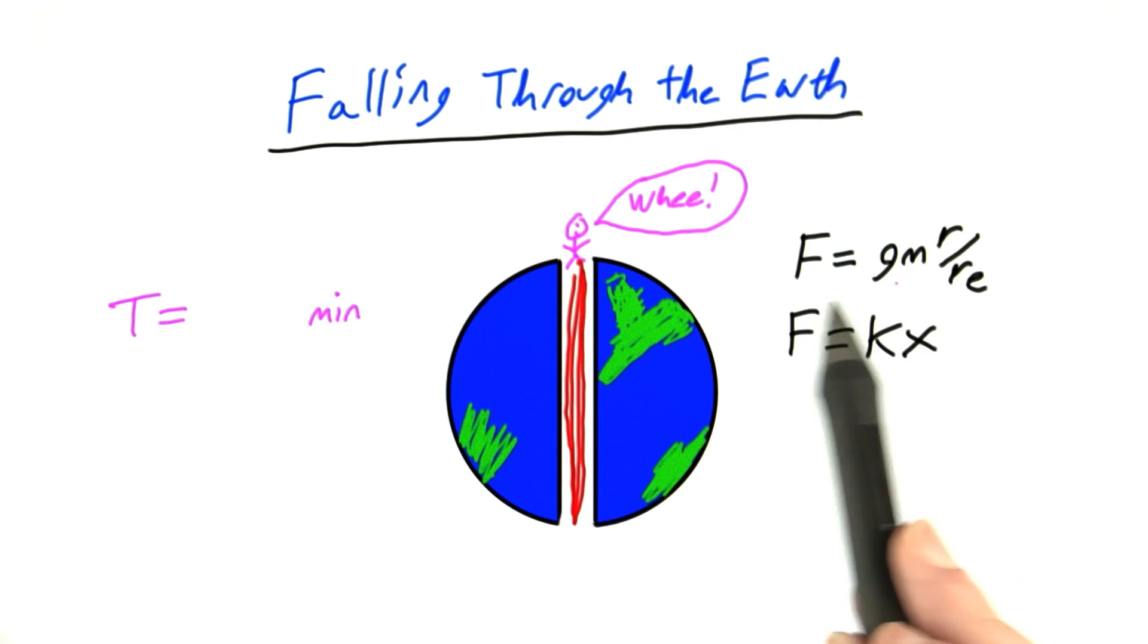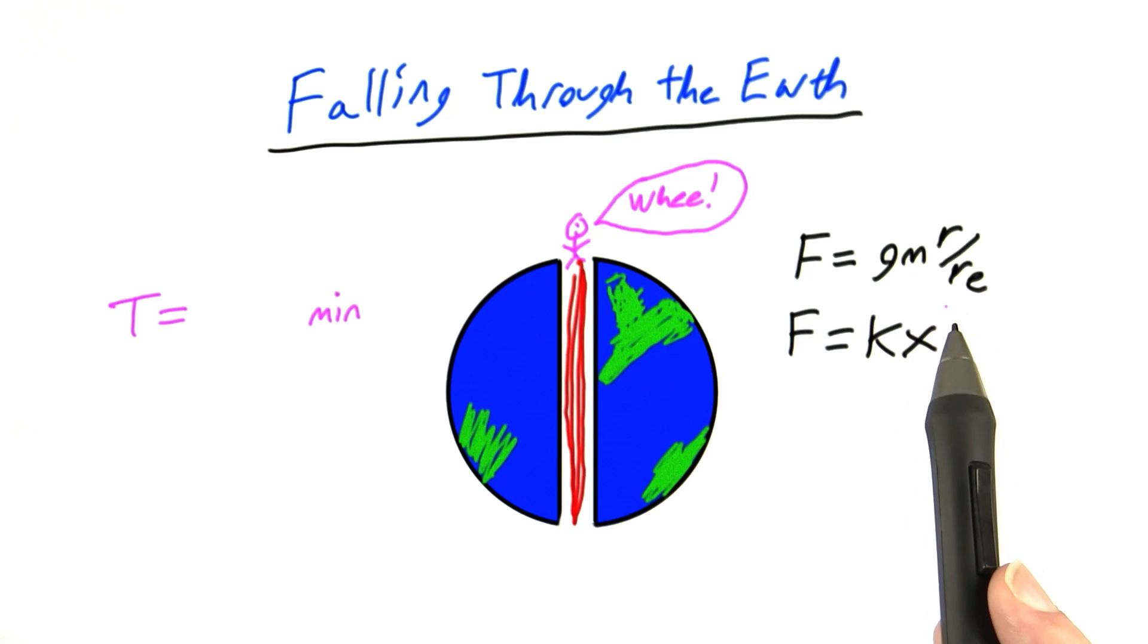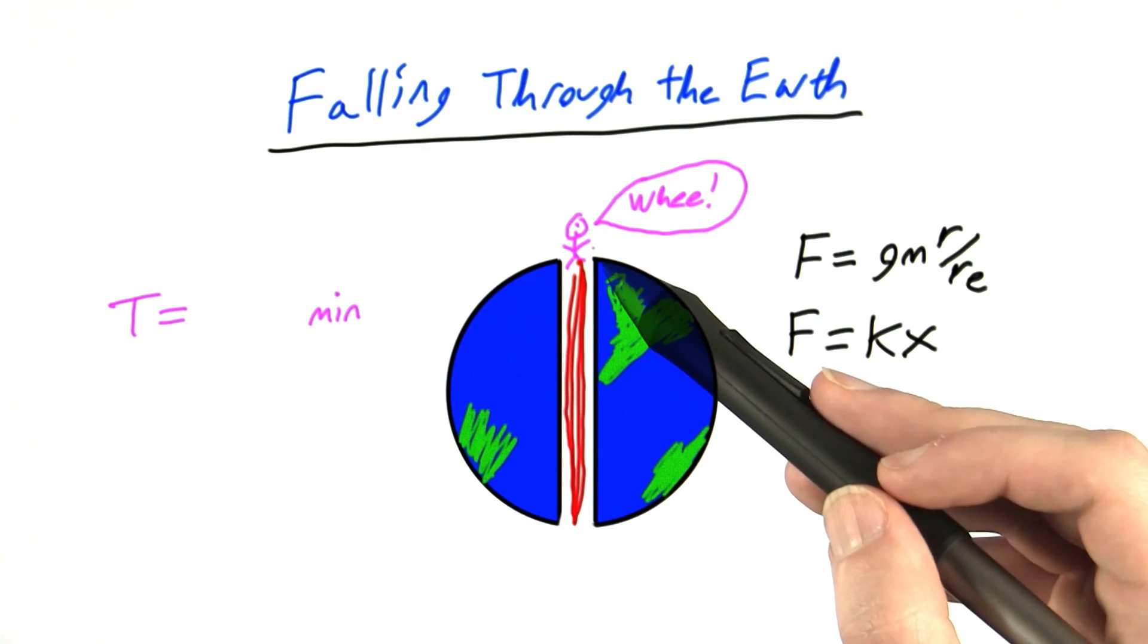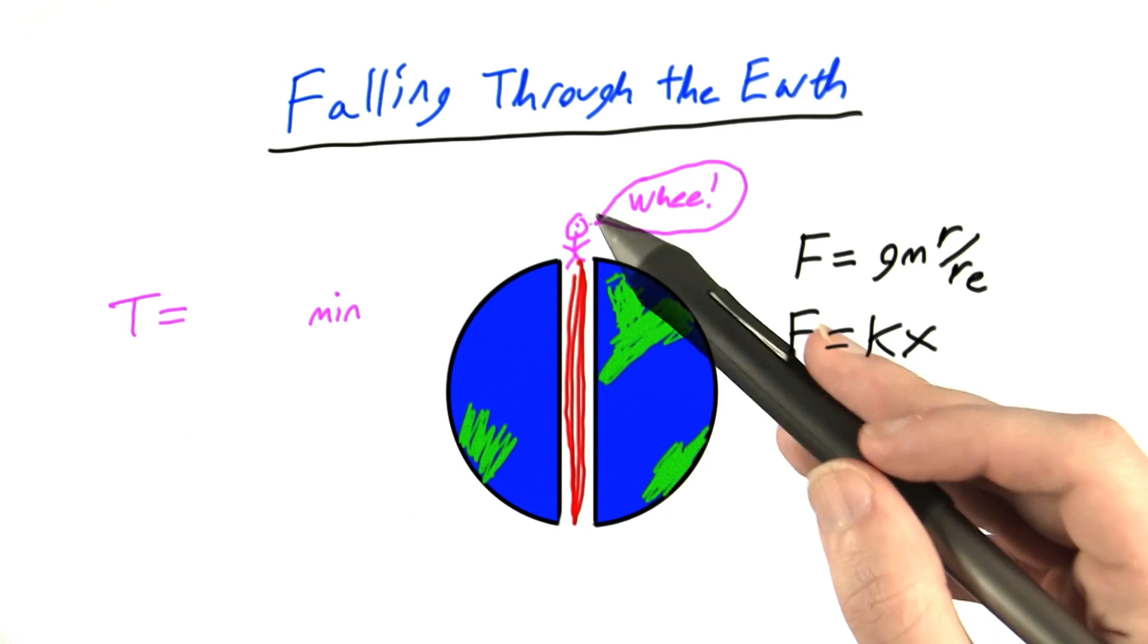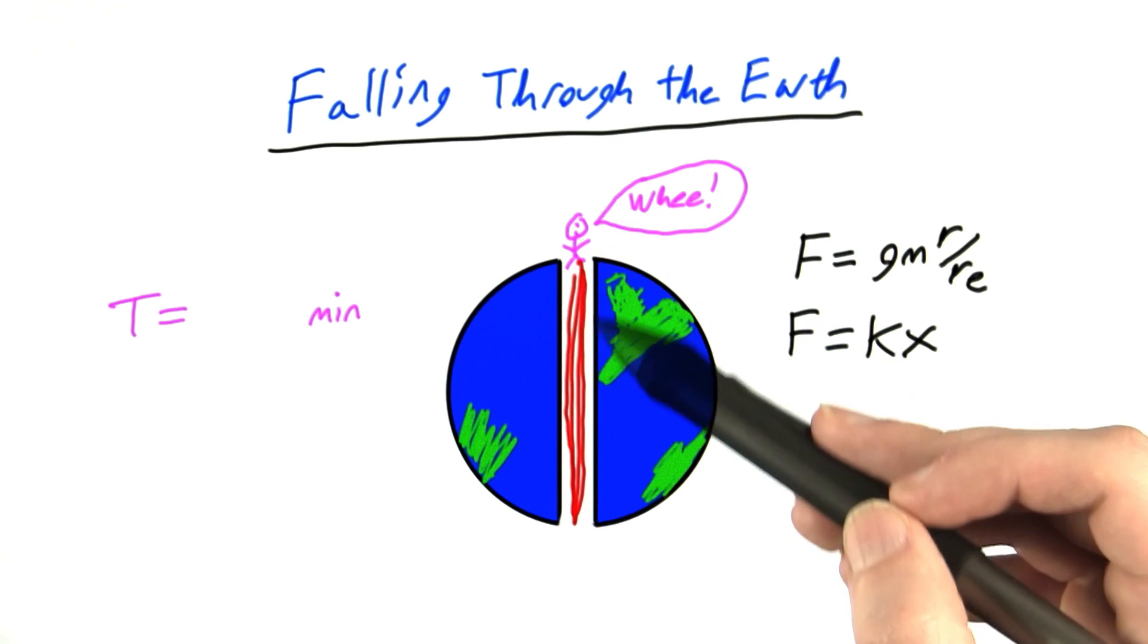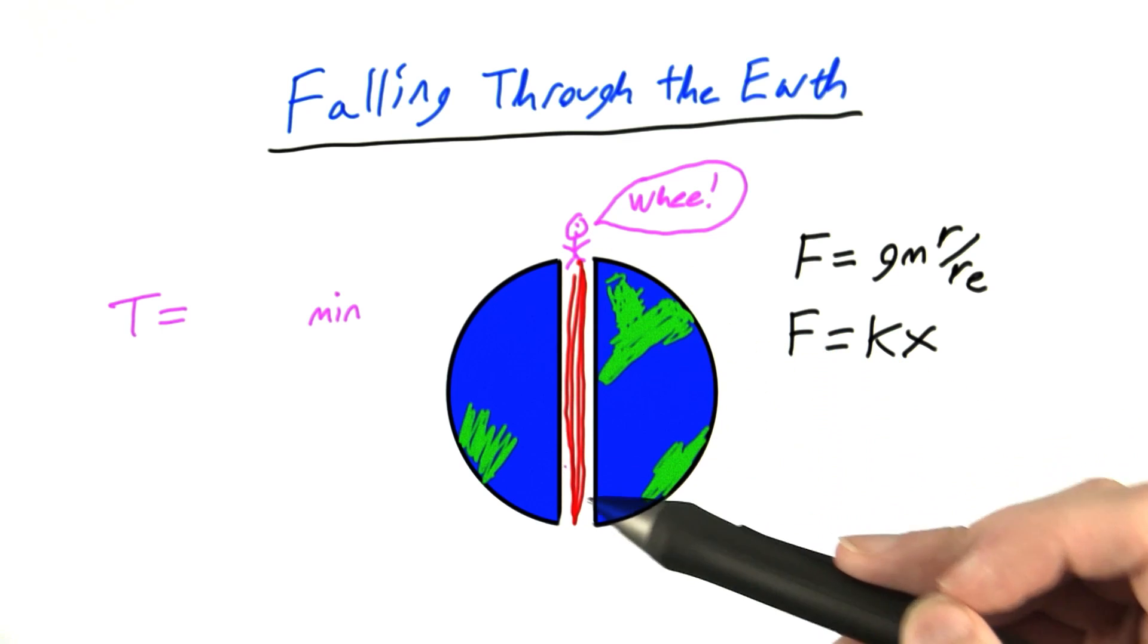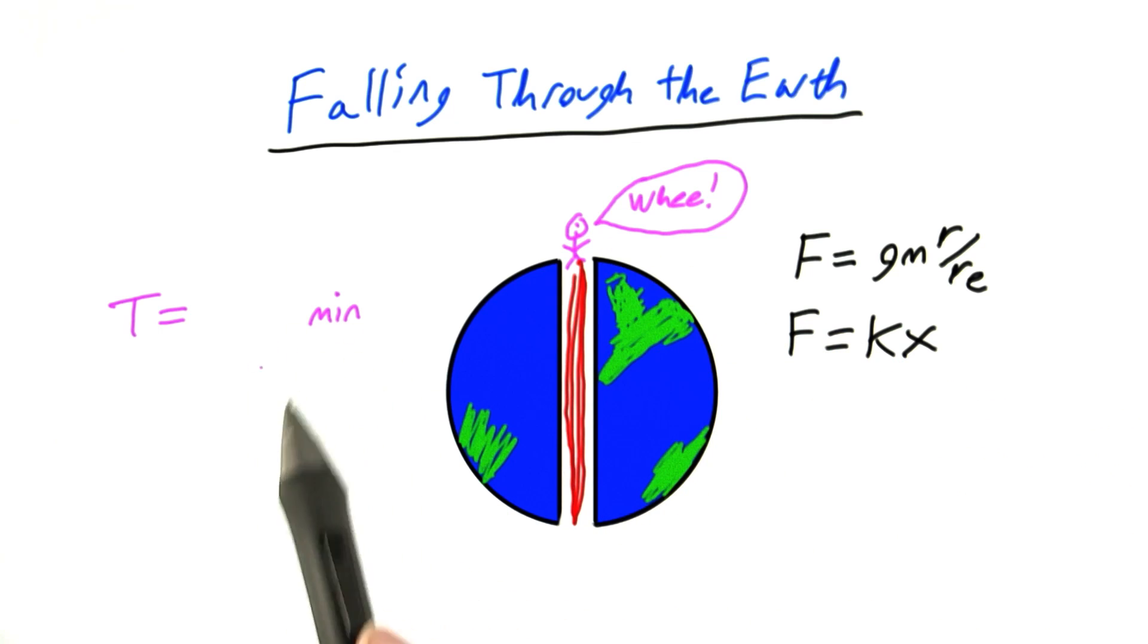Okay, now that you know how gravity scales within the Earth, I want you to tell me what's the period of this simple harmonic motion. So how long does it take for you to return to your original starting point once you jump in the Earth, completing one complete cycle here? Put your answer in minutes.